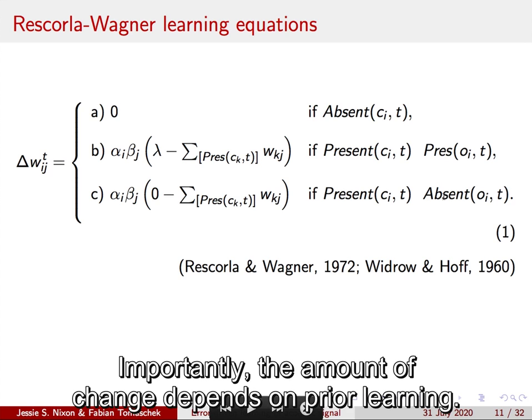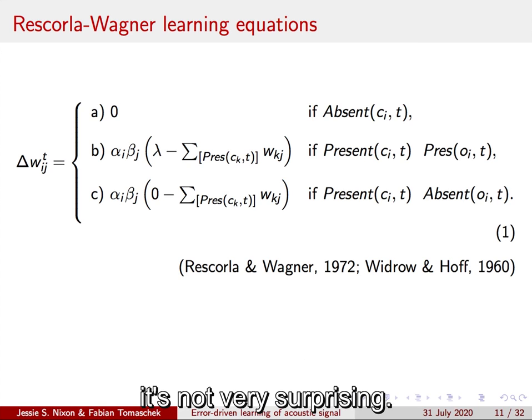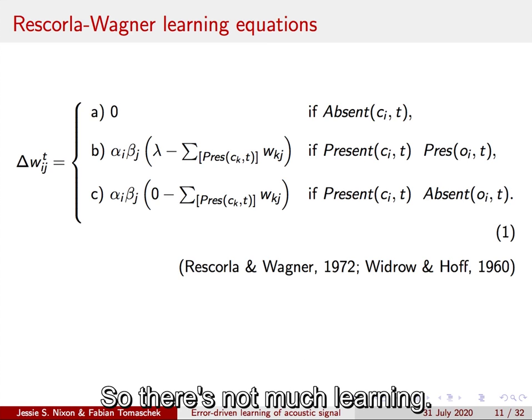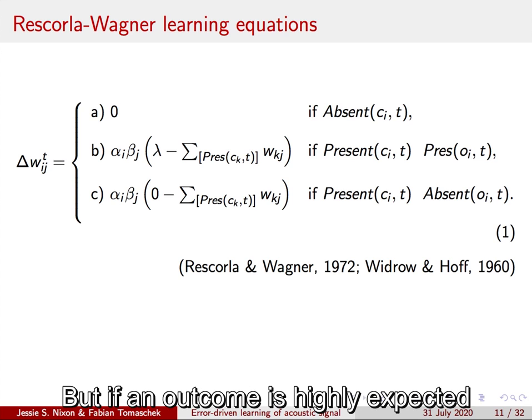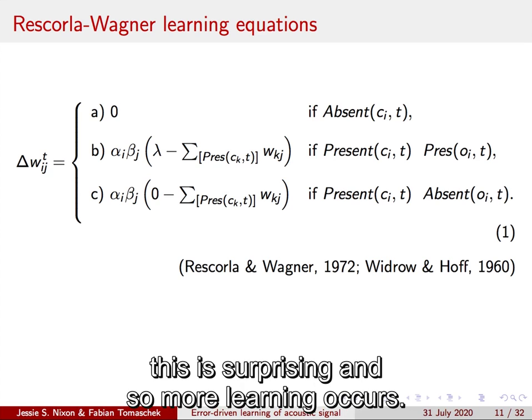Importantly, the amount of change depends on prior learning. If an outcome is highly expected and occurs, it's not very surprising, so there's not much learning. But if an outcome is highly expected and doesn't occur, or was not expected and does occur, this is surprising and so more learning occurs.